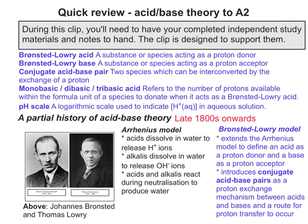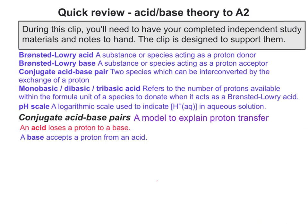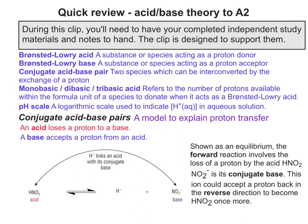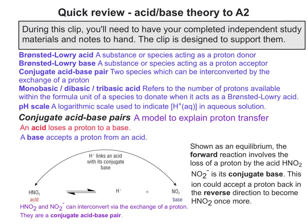Let's now look at how a conjugate acid-base pair works. HNO2 is an acid, and it loses a proton to form NO2-. NO2- is then regarded as its conjugate base, because that ion could accept a proton back in the reverse direction to become HNO2 again. Because they can interconvert by the exchange of a proton, this makes HNO2 and NO2- a conjugate acid-base pair.